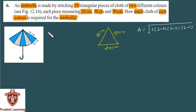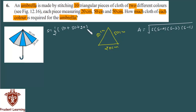Where s is the semi-perimeter of the triangle. S is half the sum of all sides: 50 plus 50 plus 20 equals 120, divided by 2 gives us 60 cm. So the semi-perimeter is 60 cm.